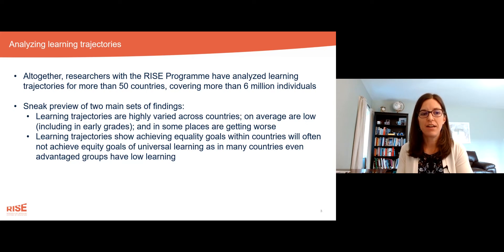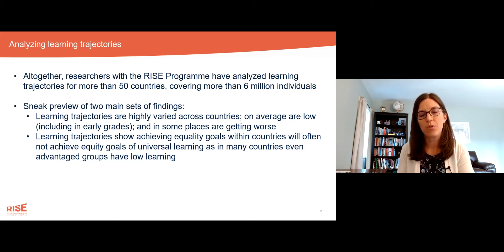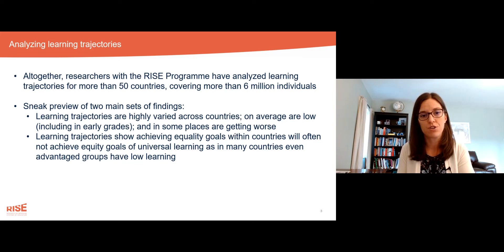As a second set of findings, we find that learning trajectories show that achieving equality goals within countries will often not achieve equity goals of universal learning. In many countries, even more advantaged groups have low learning on average.